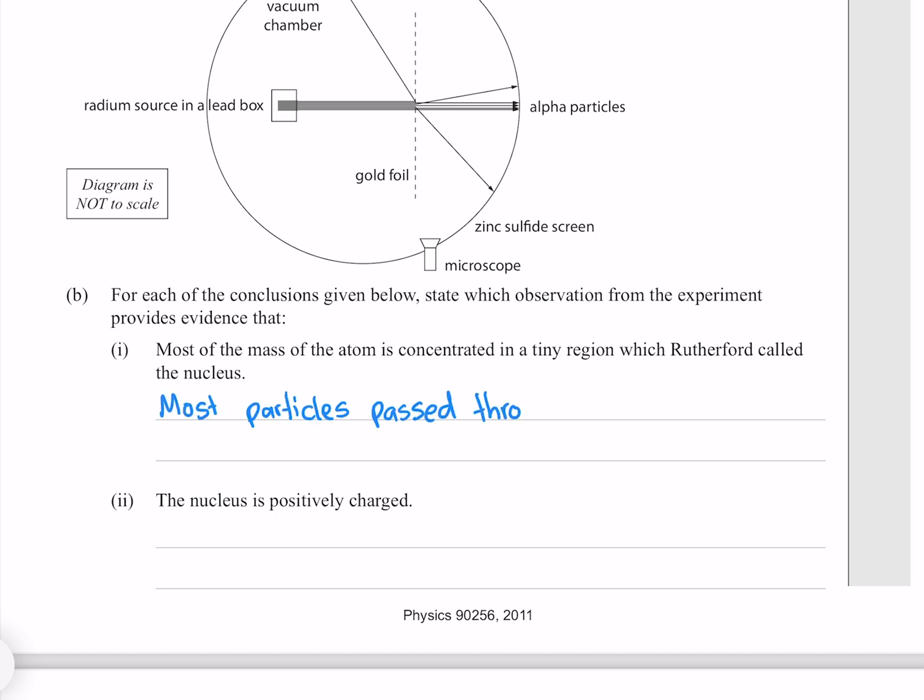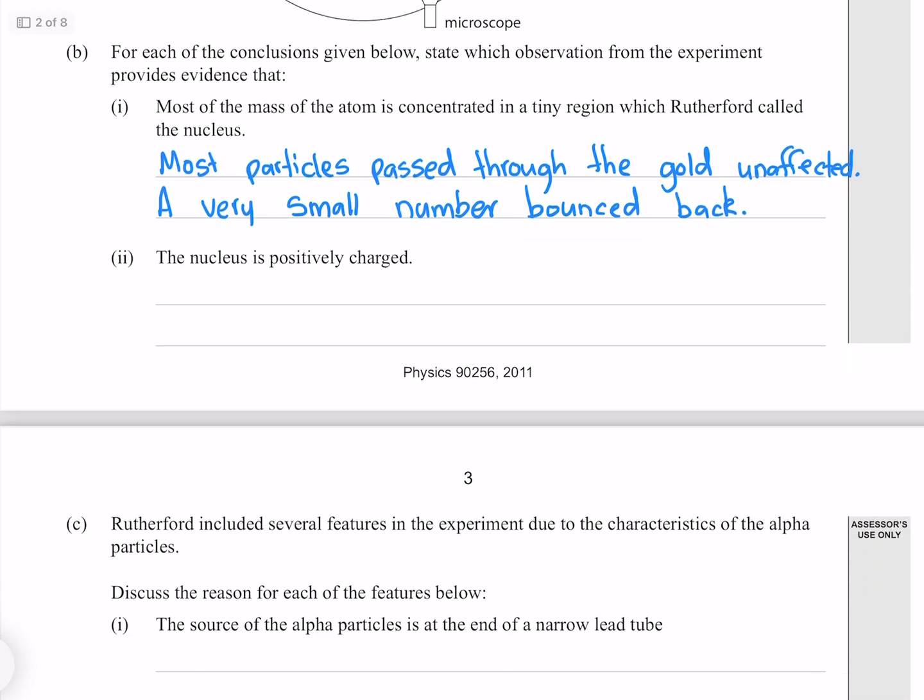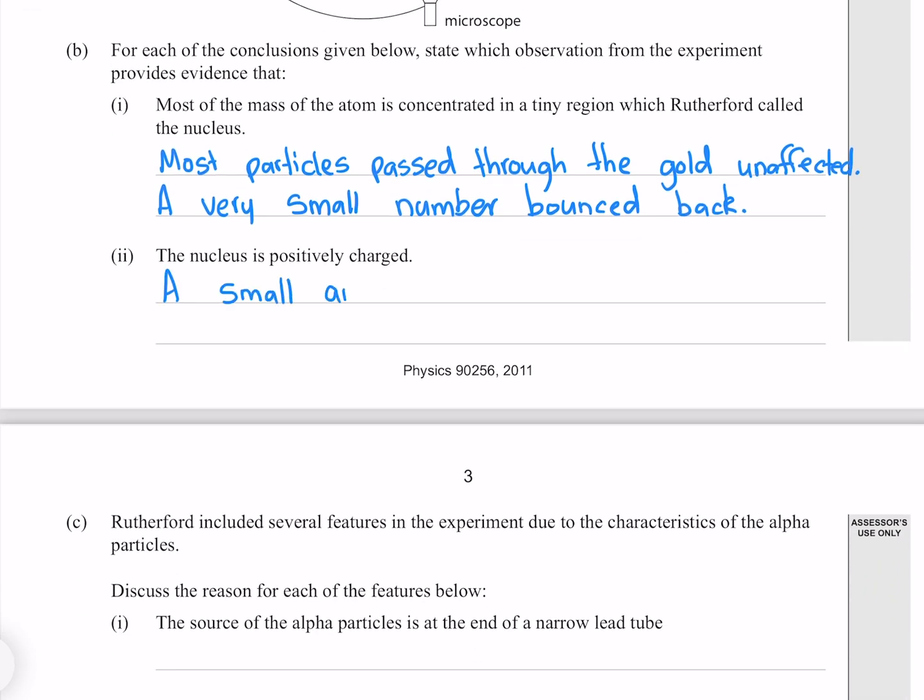Most particles passed through the gold unaffected. A very small number bounced back. The nucleus is positively charged. A small amount of positive alpha particles were deflected.